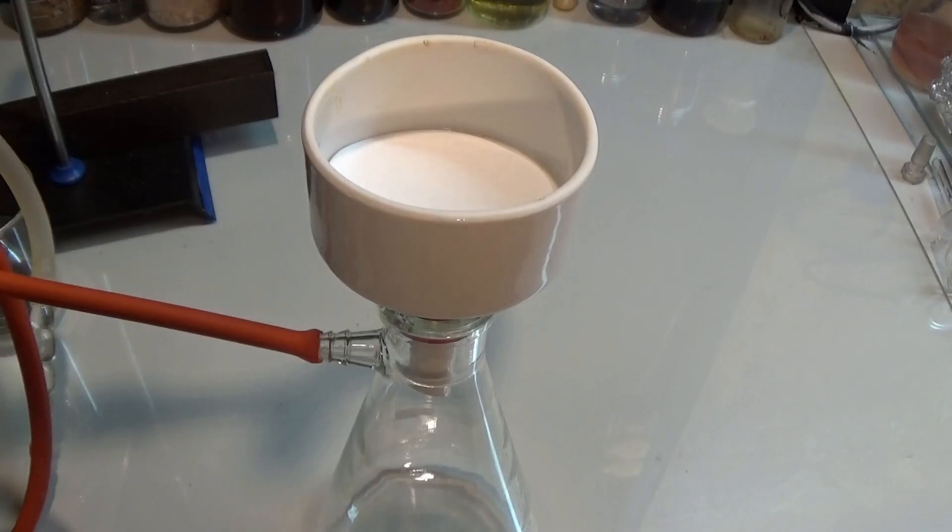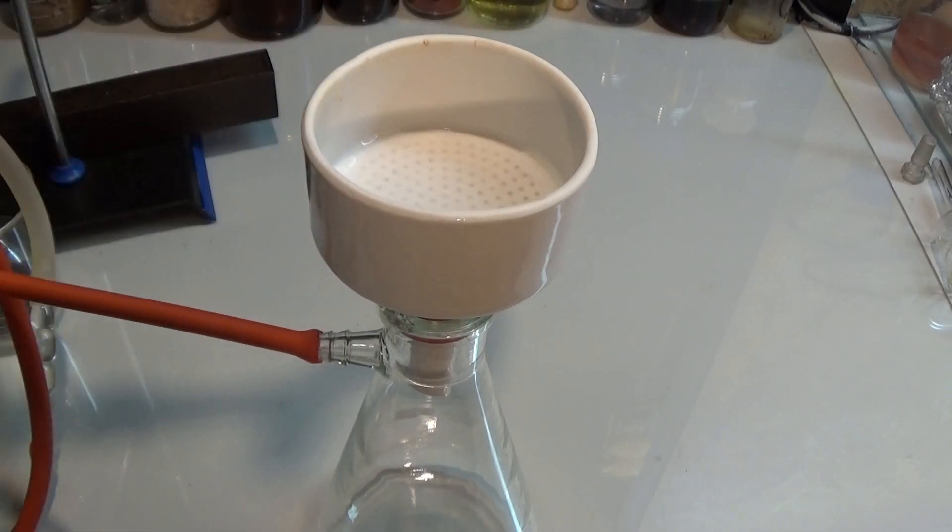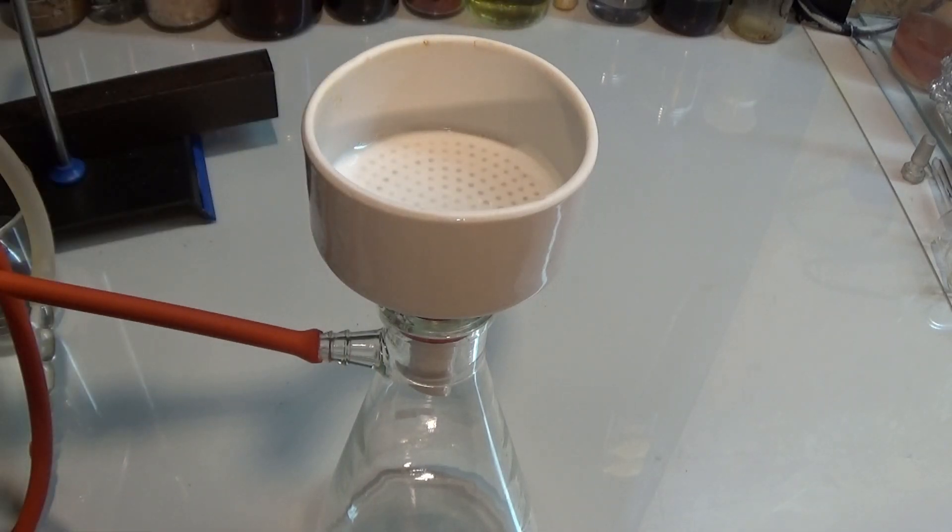The water washed hardener is then filtered off using a Buchner funnel. Pro tip: wet the filter paper with whatever solvent you are using.